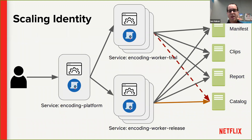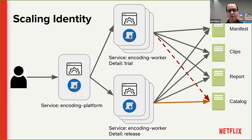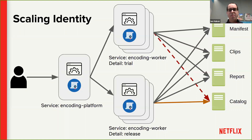What we do in practice is give these services the same name but a different detail attribute. All the services in common can just add access to the encoding worker service, but the catalog service that cares about the difference can look at this additional detail and only grant access if that detail says 'release.' This is an example of how we've started adding additional attributes to our identity that empower us to make simple ACLs when we need them, but also get much more granular access control for services that need it.